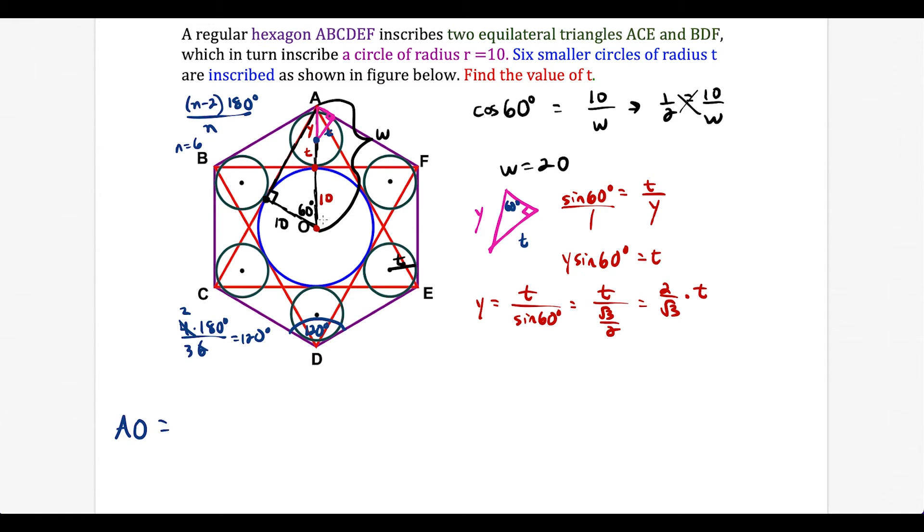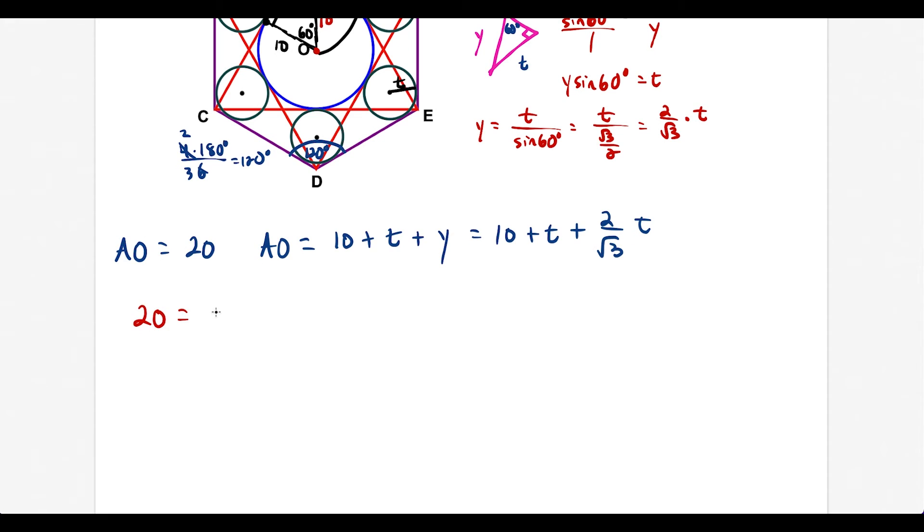So now let's combine everything. We just found that the distance from A to O was equal to 20 units, because we labeled this as W. But we could also say that AO is equal to 10 plus t plus y. So this is going to be equal to 10 plus t plus y, which we just found is 2 over radical 3 times t. But we just said that AO is equal to 20. So we could set these equations equal to each other. We have 20 equals 10 plus, and I'll factor out a t. So we have t times (1 + 2/√3). We'll subtract 10 on both sides. So 10 equals t times (1 + 2/√3). So then we just have to divide by (1 + 2/√3).